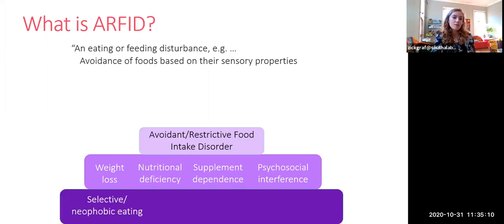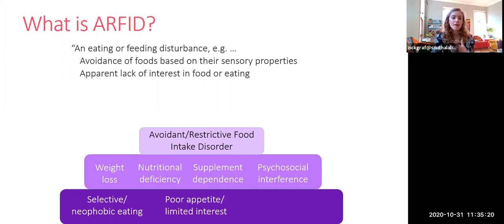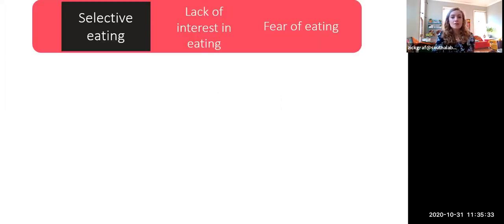The DSM describes what types of eating restrictions can lead to those four ARFID symptoms. These are: avoidance of foods based on their sensory properties — which I'll refer to as selective neophobic eating or picky eating; an apparent lack of interest in food or eating — which I'll refer to as poor appetite or limited interest; and fear of aversive outcomes of eating — which I'll refer to as fear of negative consequences.